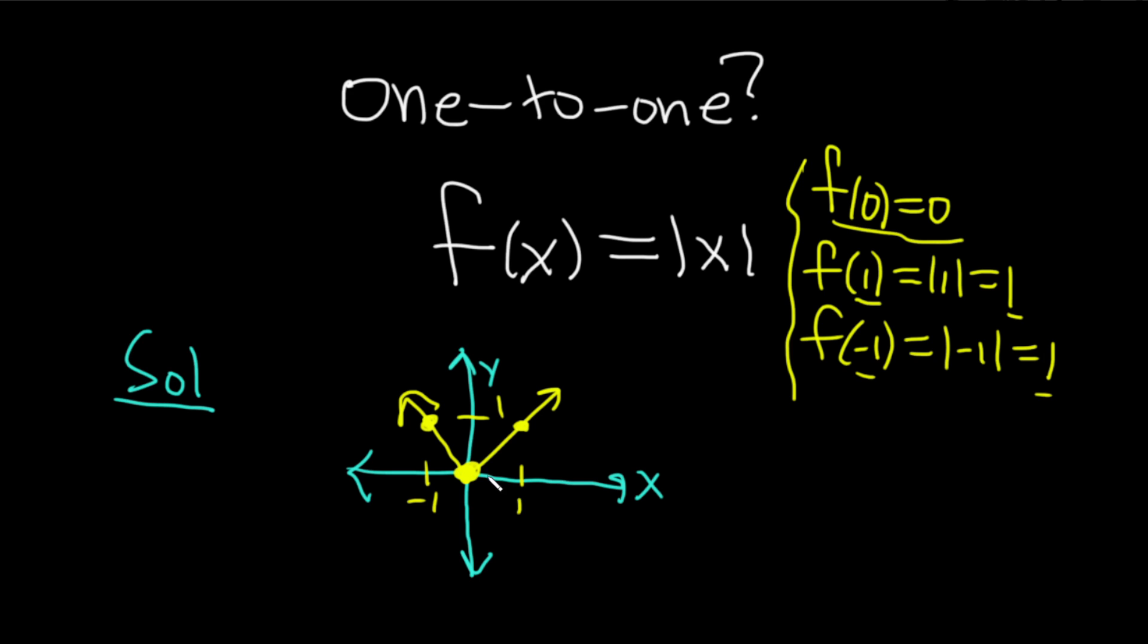So is the function one-to-one? Well, if you can find just one horizontal line that crosses more than once, then the answer is no, it is not. So a one-to-one function would look something like this, so that no matter how many horizontal lines you draw, it'll never cross more than once. But if you can find one that crosses, then it's not one-to-one.